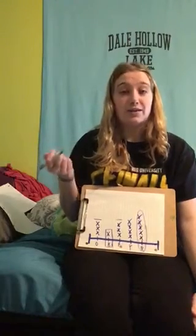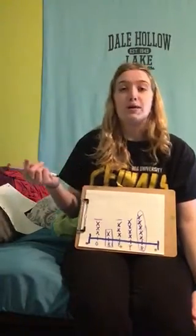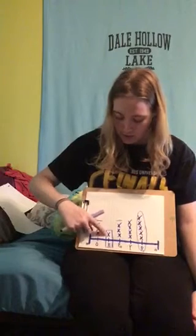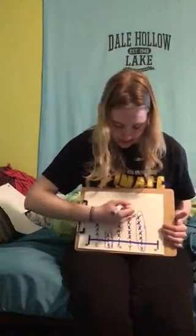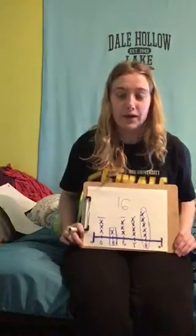Another thing I can do is find out the total number of things I had. To find the total, I want to count all of the X's in my line plot. Starting over here and counting all the way through — 1, 2, 3, 4, 5, 6, 7, 8, 9, 10, 11, 12, 13, 14, 15, 16. So I have 16 total items on my line plot.